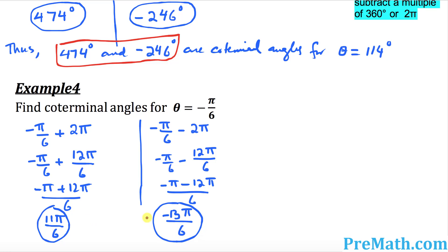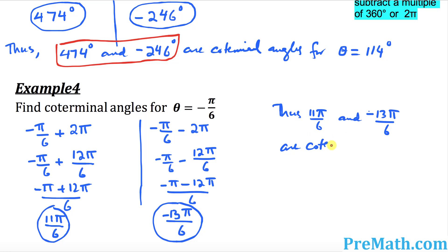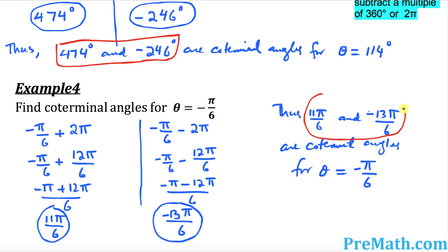Thus, 11π/6 and negative 13π/6 are the coterminal angles for θ = negative π/6.